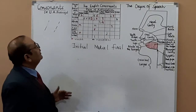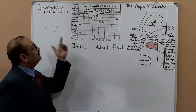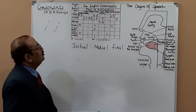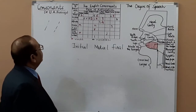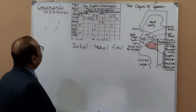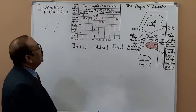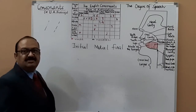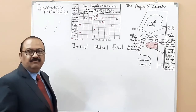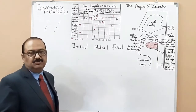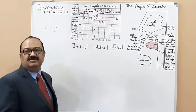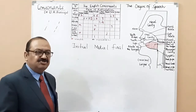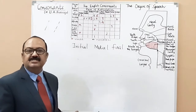We have discussed plosives, we have discussed fricatives, now we come to affricates. There is only one pair — two consonant sounds: CH and J. This is how we pronounce them.